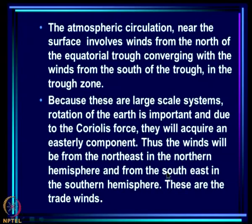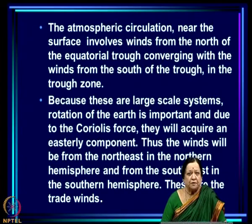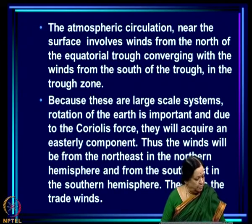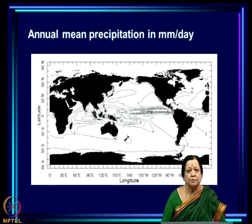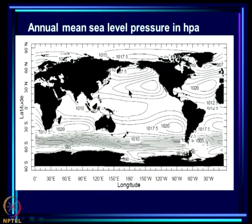When the atmosphere is heated from below with heating being maximum at the equatorial region, you expect ascent over the heated trough region and descent in the surrounding region. The atmospheric circulation near the surface involves winds from north of the equatorial trough converging with winds from south of the trough. If we have a trough zone around the equatorial region, winds come from the north in the northern hemisphere and from the south in the southern hemisphere.